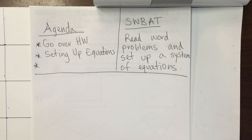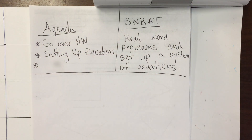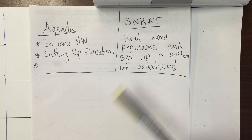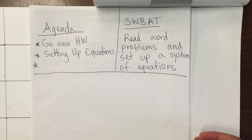Hello students! Today's agenda is to go over your homework. We're going to be setting up equations and your homework is going to be for 5.2. Today students will be able to read word problems and set up a system of equations. Remember, a system of equations means that you have more than one equation and you're just trying to find where the two lines would meet, but right now we are just setting up equations from word problems.